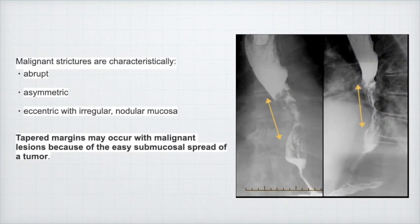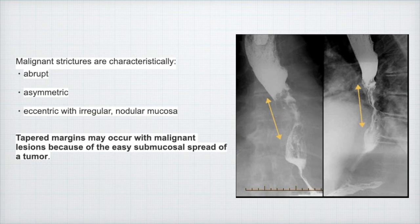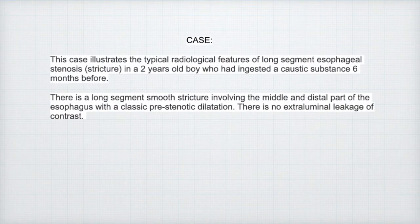Caustic ingestion in children is usually accidental. Corrosive esophagitis can cause esophageal perforation, fistulas, stricture formation in the esophagus, stomach lesions, and may progress to the development of esophageal carcinoma. Contrast studies provide essential information regarding the location, number, length, and tightness of the esophageal strictures. So let's go and see our today's case.